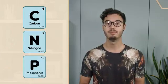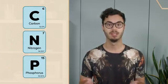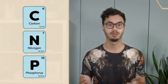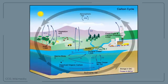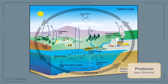Carbon, nitrogen and phosphorus exist in many forms in the atmosphere, soil and water around us. Some forms can be assimilated by plants and other primary producers that use these elements to build complex organic molecules.